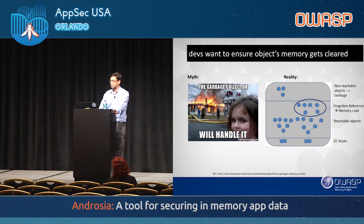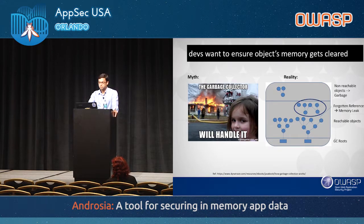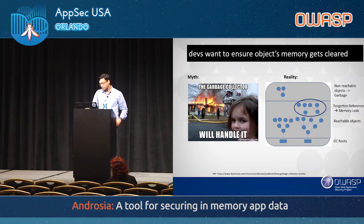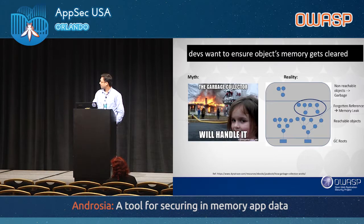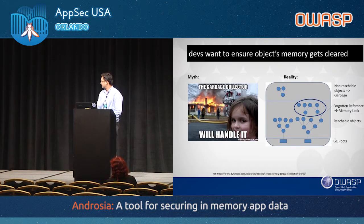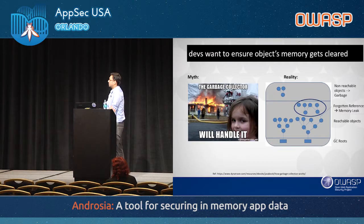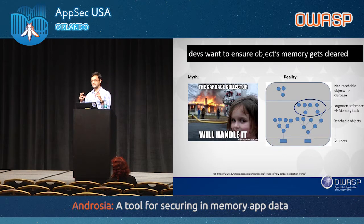Developers want to ensure object memory gets cleared after its first priority — making the code work. The myth is that the garbage collector will handle it, but that's not true. The garbage collector's scope is very limited. It works on the mark-and-sweep algorithm, starting with GC roots — special objects like the main thread or static variables of the main class — and doing a depth-first search, marking all reachable objects.